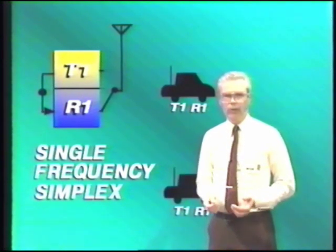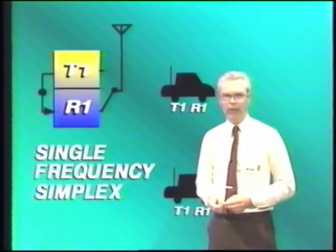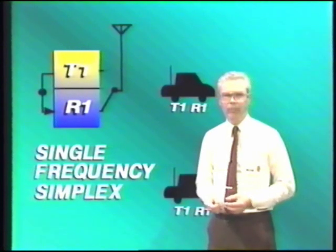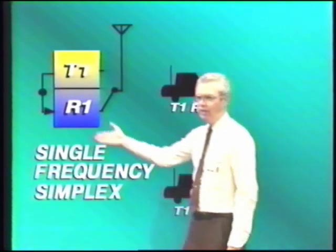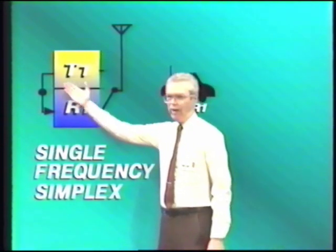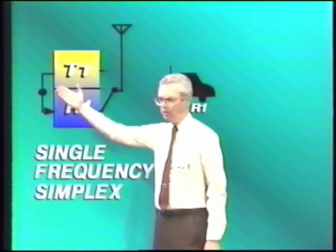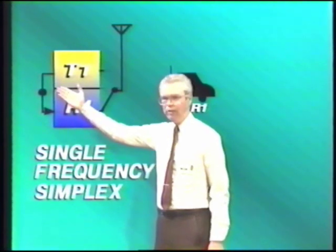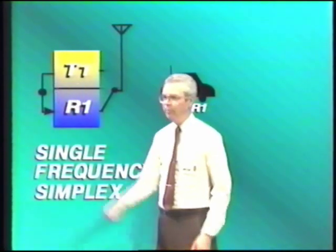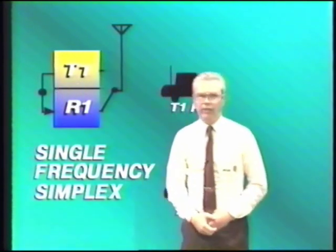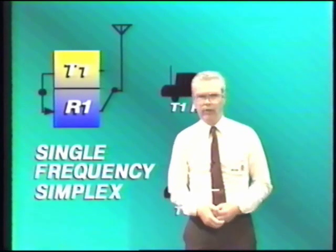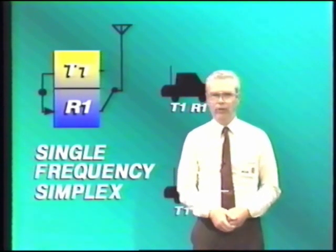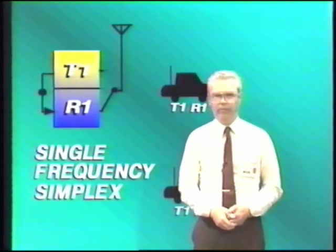when the transmitter is operated. Otherwise, you'd hear your own transmitter, and your voice would come booming out of the receiver loudspeaker. You may find a symbol on some system diagrams — a little circle on the line connecting the transmitter and receiver — and this indicates that the receiver is muted when the transmitter is on.